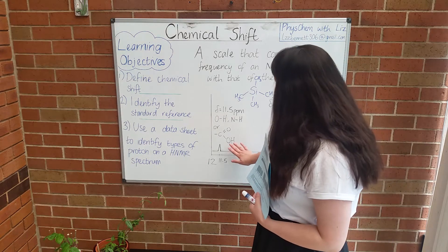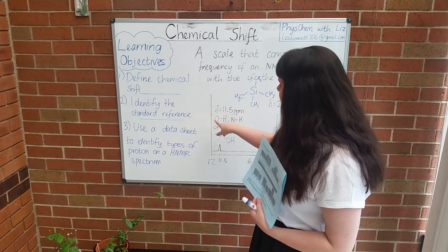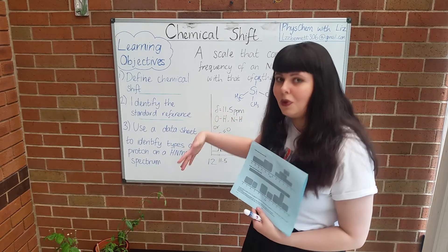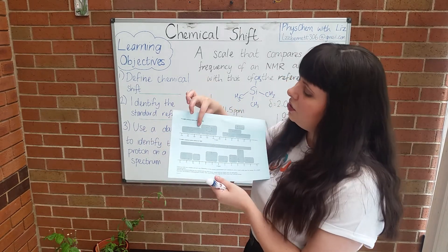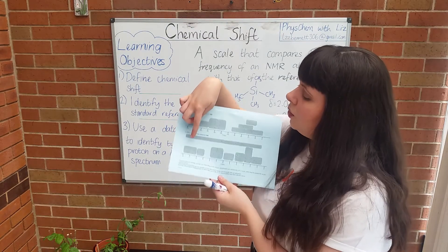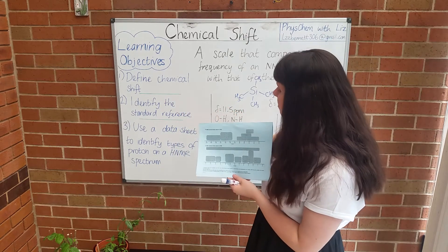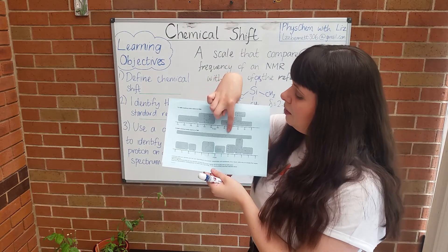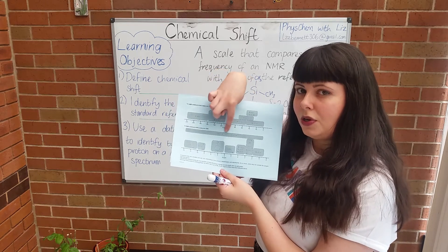In this example we have another signal at 11.5. We annotate our spectrum: delta — which is the symbol for chemical shift — equals 11.5 parts per million. Looking at our data sheet around 11.5, it could be a proton on a carboxylic acid, or it could also be an OH or NH proton. These are funny ones — they can appear at any point on a proton NMR spectrum.